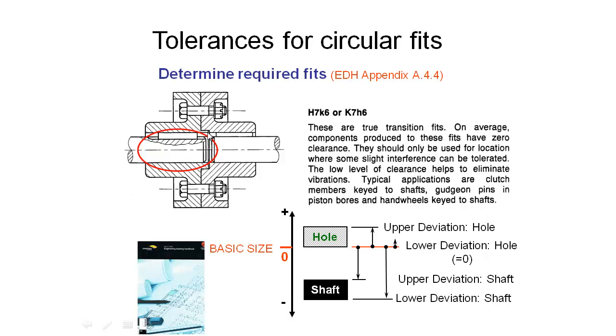It helps eliminate vibrations because they're a reasonably tight fit, and typical applications are clutch members keyed to shafts, which is very similar to what we've got over here, gudgeon pins in piston bores, and hand wheels keyed to shafts. So this sounds like the clutch members keyed to shaft is pretty close to our application, so we may use an H7K6 fit for this example.